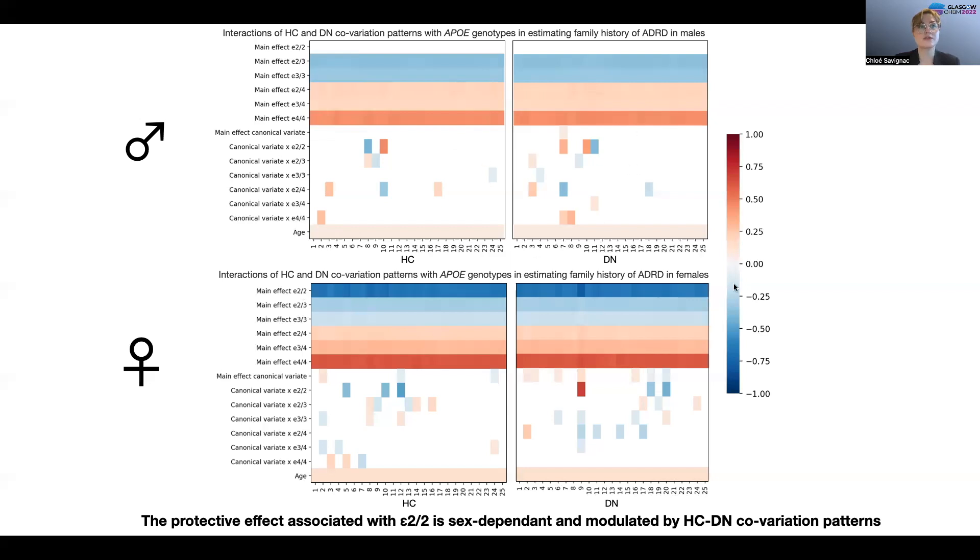Lastly, the main takeaway from these plots are these patterns of interaction between the canonical covariates and APOE genotypes. So if we zoom in for females, yes, we have shown that E2E2 is mainly protective against Alzheimer's disease risk, unless you have a brain structure that is highly expressive of mode 9 on the default network side, in which case you are twice as much likely to have family history of Alzheimer's disease.